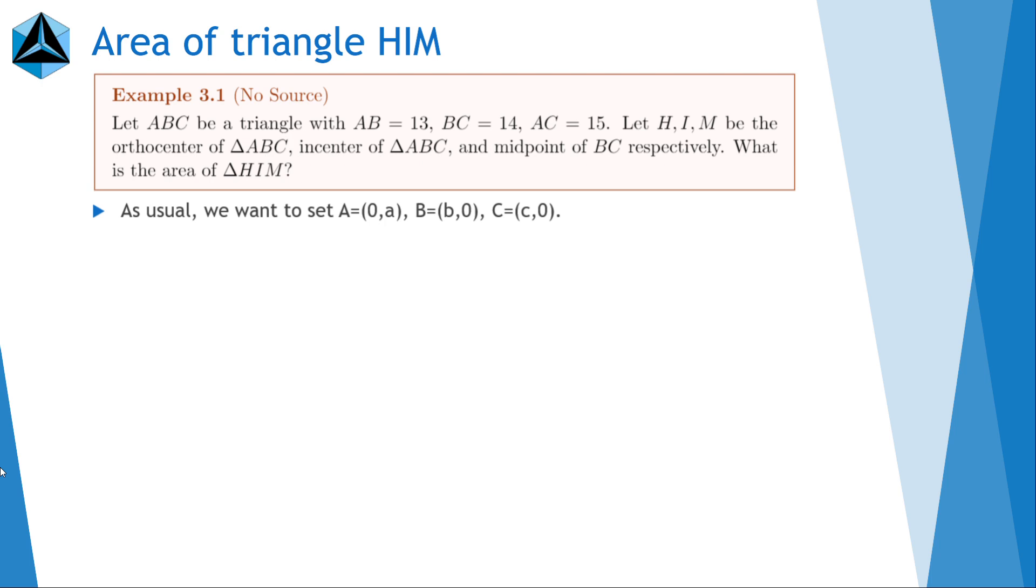So since this is a 13, 14, 15 triangle, we can draw something like this. This is the origin right here. And then this is the 5, 12, 13. And this is a 9, 12, 15 triangle. So it'll look something like this. So now what you can do is set the following things: a equals 0 comma 12, b equals negative 5 comma 0, and c equals 9 comma 0. And then it's pretty easy to see that M is the midpoint of BC, then it's just negative 5 plus 9 over 2, so 2 comma 0.